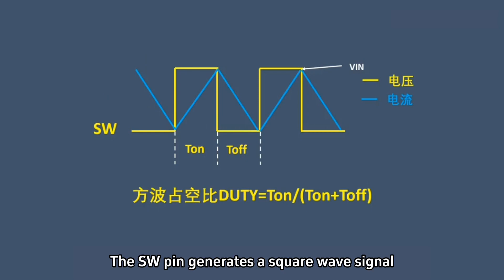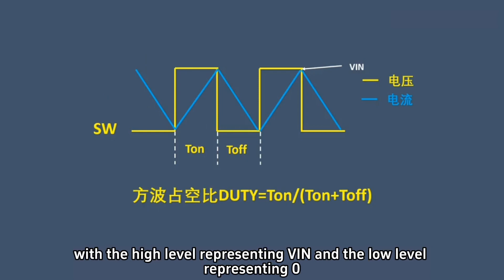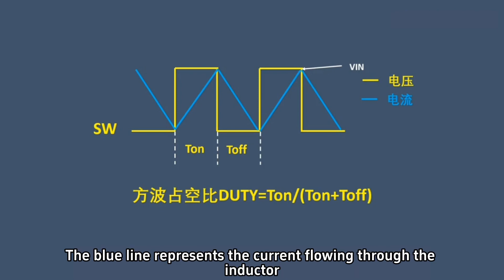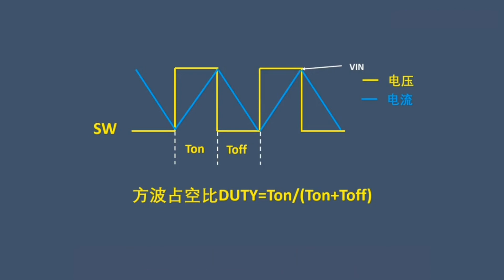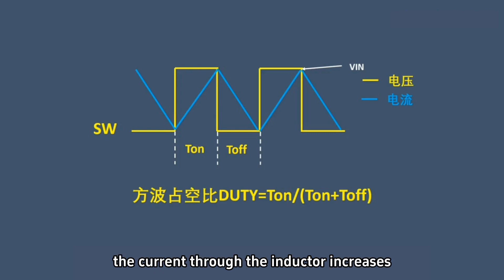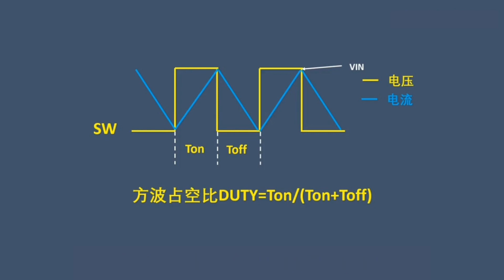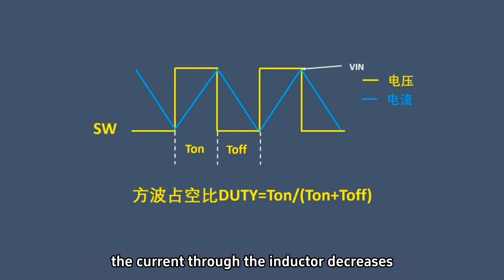The SW pin generates a square wave signal, with the high level representing VIN and the low level representing zero. The blue line represents the current flowing through the inductor. When the SW signal is high, the current through the inductor increases; when the SW signal is low, the current through the inductor decreases.